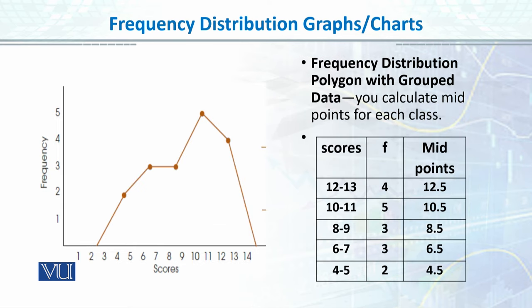We put the midpoints on our x-axis. For example, if I have these classes: 4-5, 6-7, 8-9, my class interval is 2 because 4 and 5 means that my width interval is 2, and then I have accordingly frequencies added to it.